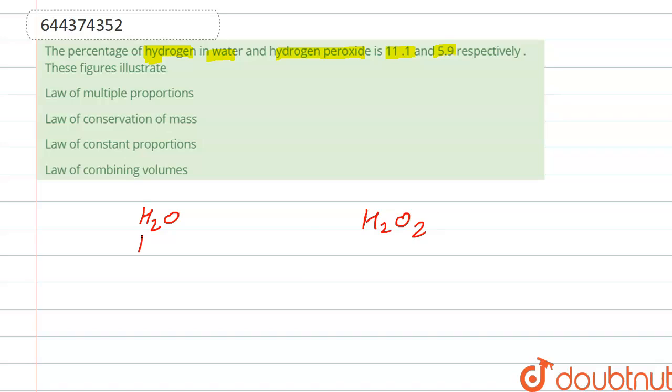So the percentage of hydrogen is given as 11.1, and here the percentage is 5.9. If we see, it is approximately double. So here it is in the ratio 2 to 1, approximately double.